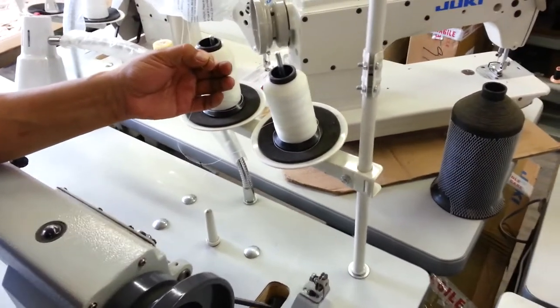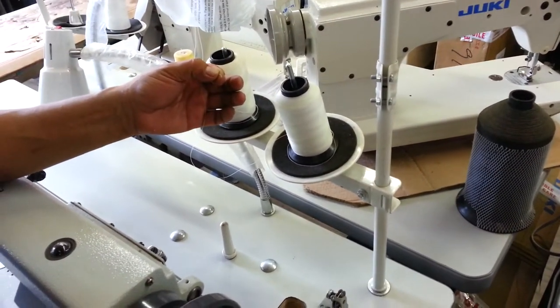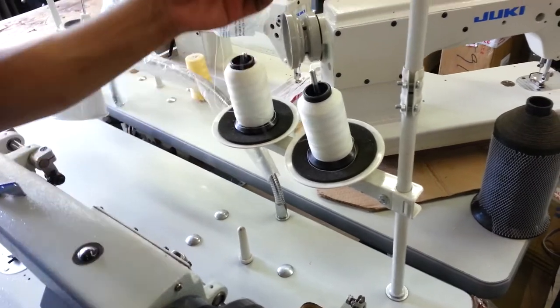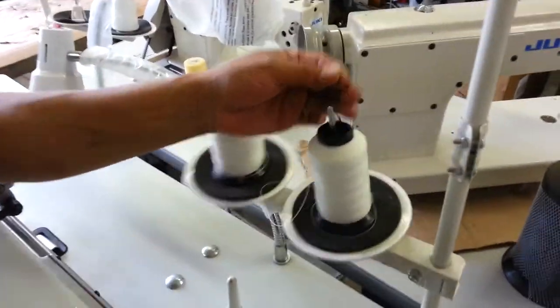This is Steve from Sewinggold.com. We're going to give you a short lesson on a T-111-155. The first thing we're going to show you is how to wind the bobbin.